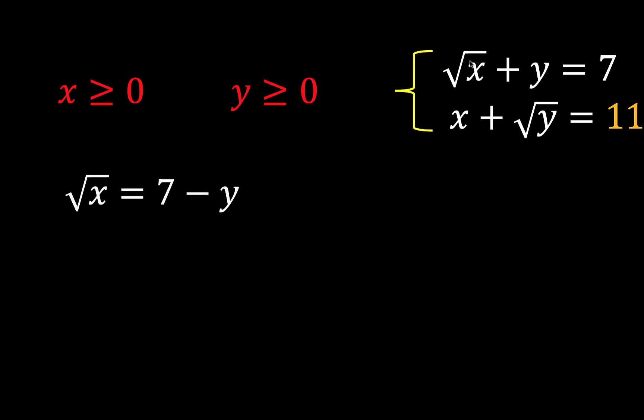Then, using this first equation, we can have square root of x equals 7 minus y by subtracting y from both sides of the equation. Since x is positive, the square root of a positive number must also be positive. Then, 7 minus y must also be non-negative. That means 7 minus y must also be greater than or equal to 0. And solving for y, we subtract 7 from both sides of the inequality. And multiplying both sides by negative 1, we reverse the direction of the inequality to get y less than or equal to 7.